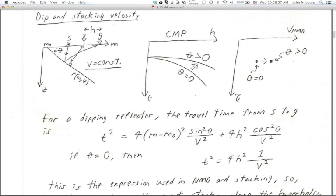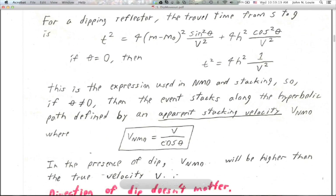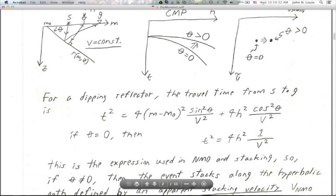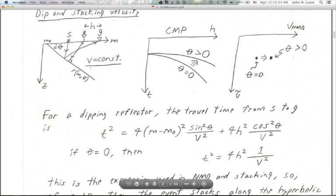The direction of dip doesn't matter — that's the wonderful thing about looking at common midpoint gathers and the whole reason for midpoint sorting. It lets you focus on the velocity without worrying too much about the geometry. Where do you go to figure out which way the dip actually is — is it positive or negative? You can see that makes no difference to the V NMO equation. Positive or negative dip still gives you the same cosine. Where do you go to get the information about which way it dips? You go to a different midpoint and observe whether the zero offset time is larger or smaller. That's what tells you the direction of dip.